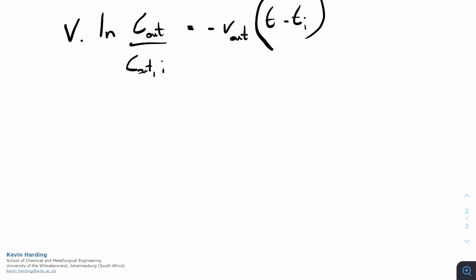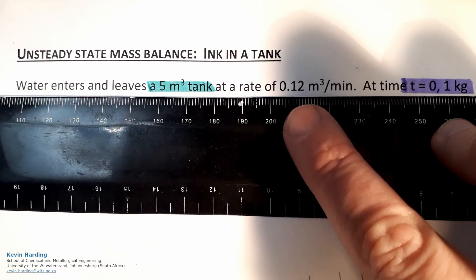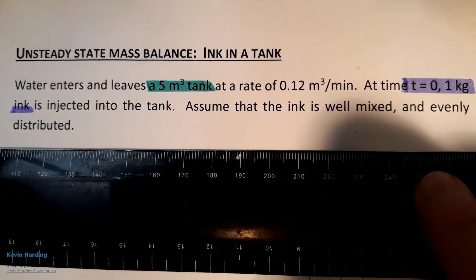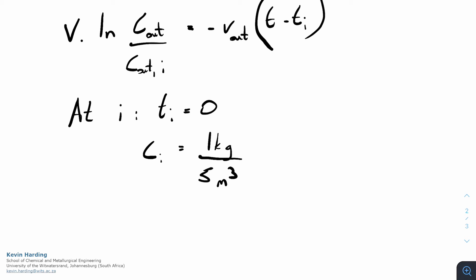From the problem: tank volume is 5 cubic meters, flow rate is 0.12 cubic meters per minute, and at t=0, 1 kg of ink is injected. The initial time t_i equals 0. The initial concentration C_initial equals 1 kg divided by 5 cubic meters, which equals 0.2 kg per cubic meter.